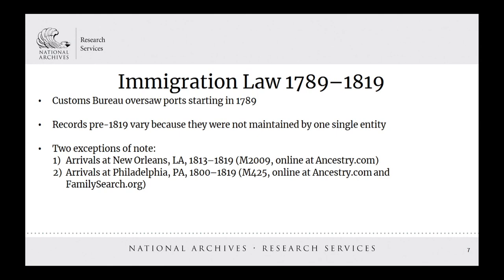Our discussion of immigrant laws starts in the 1789 to 1819 timeframe, when documentation varied significantly because there was not a single entity creating and maintaining records of immigrants. The Customs Bureau oversaw ports starting in 1789, but with limited exceptions such as New Orleans and Philadelphia, which consistently recorded arrivals for spans of multiple years, it's difficult to find documentation of immigrants to the U.S.